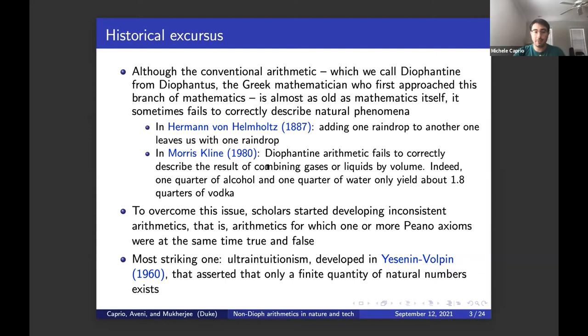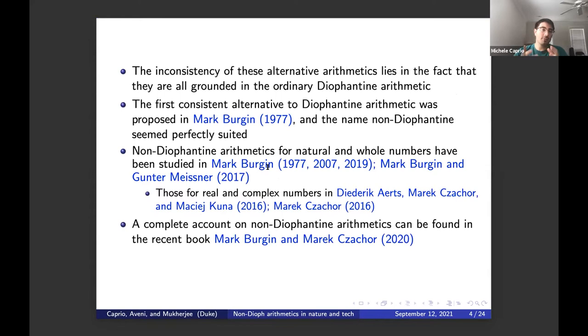To overcome this issue, scholars started developing inconsistent arithmetics, arithmetics for which one or more Peano axioms were at the same time true and false. The most striking one was ultra-intuitionism, developed by Yesenin Volpin, that asserted that only a finite quantity of natural numbers exists. Other approaches were more moderate, but all of them had the same flaw, that is the inconsistency, rooted in the fact that they all were grounded in the ordinary Diophantine arithmetic.